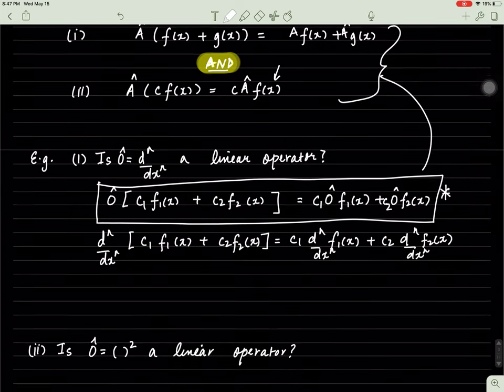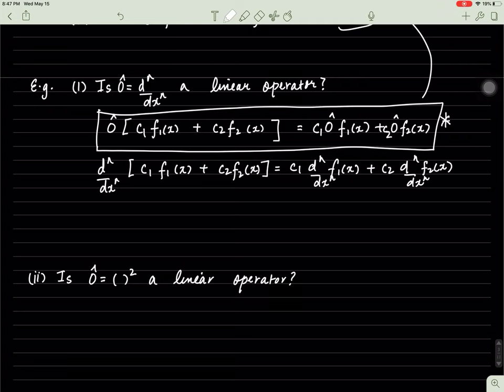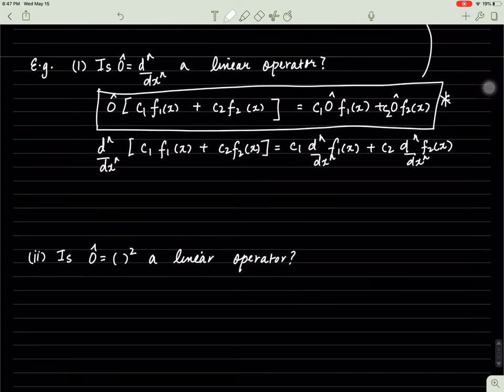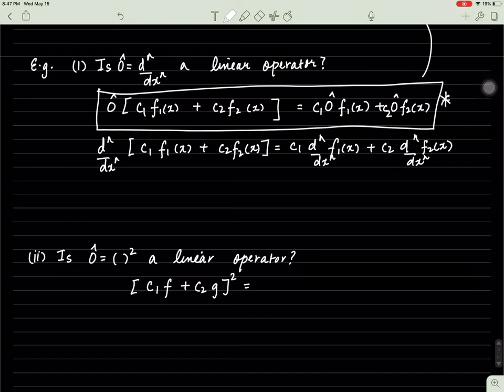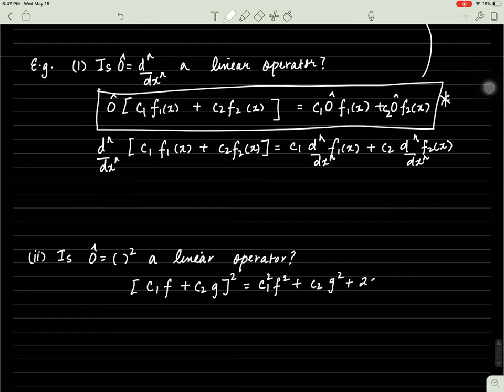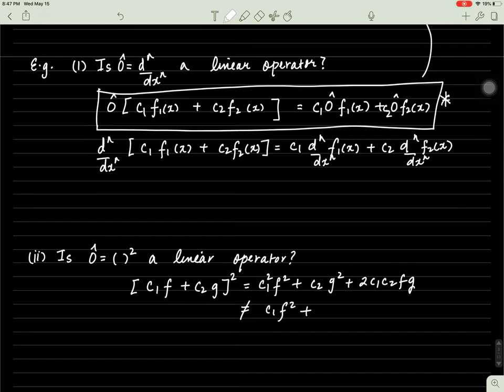The other question is, is the square operator a linear operator? We do it on the same criteria. In this case, I'm going to rewrite this a little bit short-handed so I can save time. I'll get c1 squared f squared plus c2 squared g squared plus 2c1 c2 f times g, which is indeed not equal to c1 f squared plus c2 g squared. Therefore, the square operator is not a linear operator.